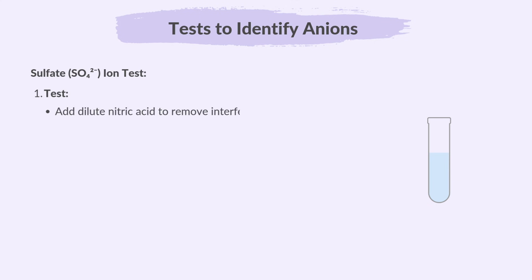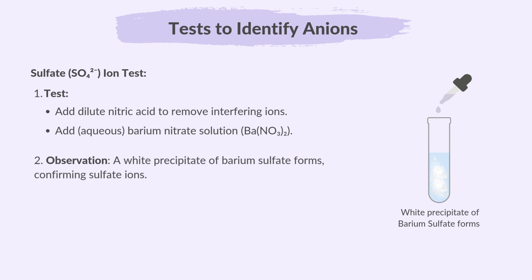For the sulfate ion test, add dilute nitric acid to remove interfering ions, then add aqueous barium nitrate solution. A white precipitate of barium sulfate forms, confirming sulfate ions. Here's the reaction.